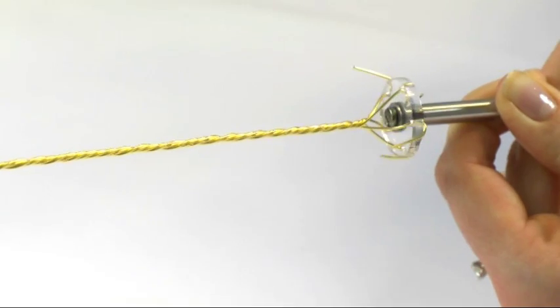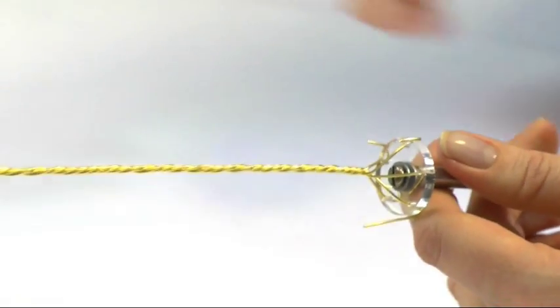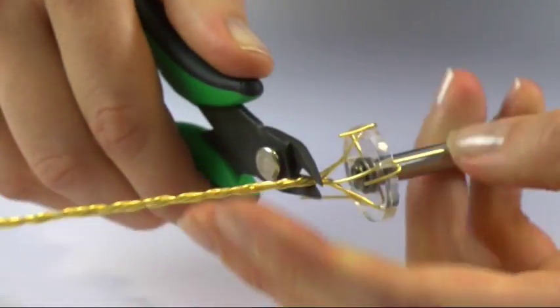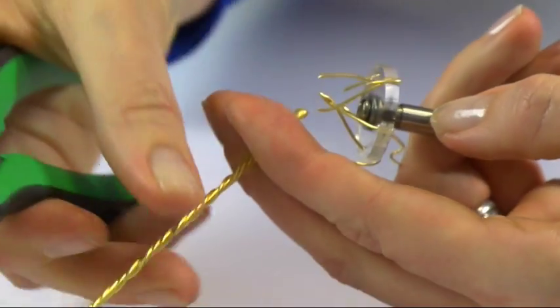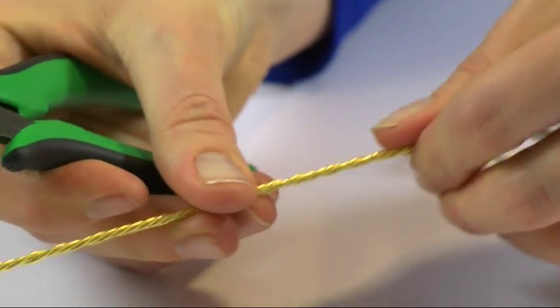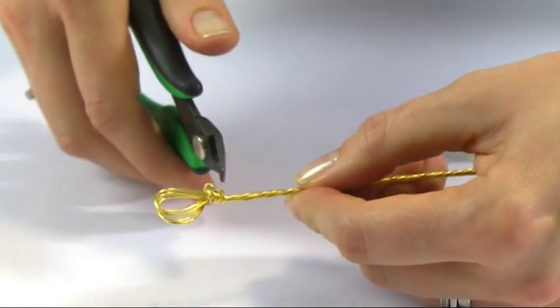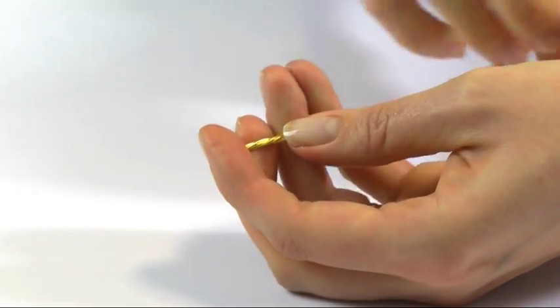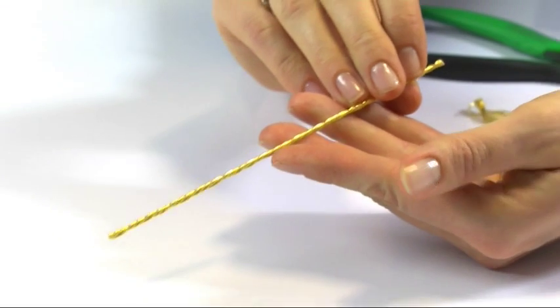When you're happy with the overall look, you stop twisting and you simply snip this like so. And then snip off your supporting loop, leaving you with the bar to make your jewelry with.